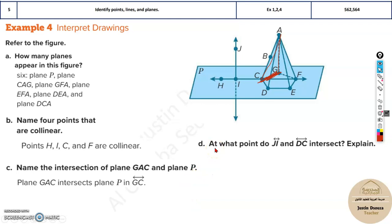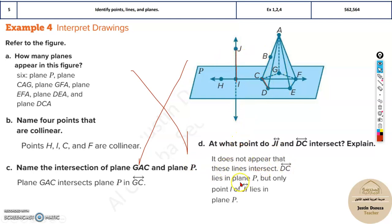And lastly, we have at what point do JI and DC intersect? So, let's see where is JI over here. Where is DC? Now, intersection means they touch each other. They cut each other. You can see these are not touching in this figure. So, it does not appear to intersect. That's the thing. That's the answer. Because over here, you can clearly see they're not touching. And the answer will be just, they do not intersect.